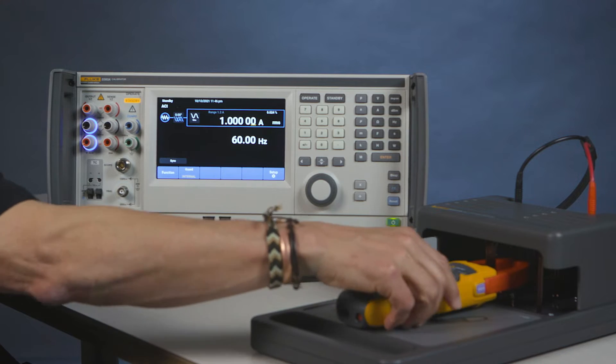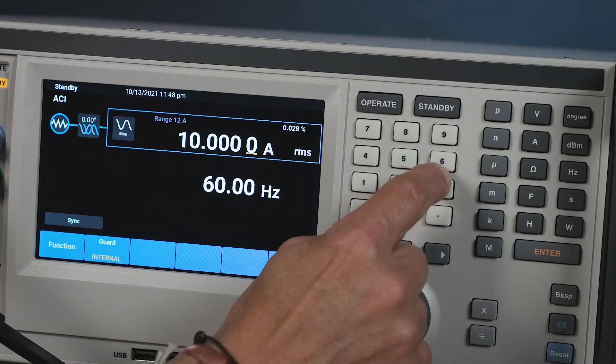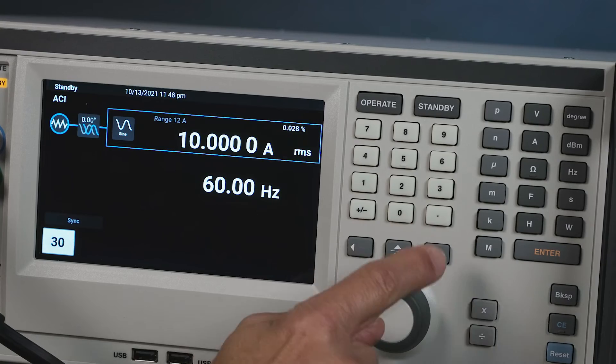We'll just place that clamp meter right in the middle. We're going to go to 30 amps, so we'll enter 30 amps.